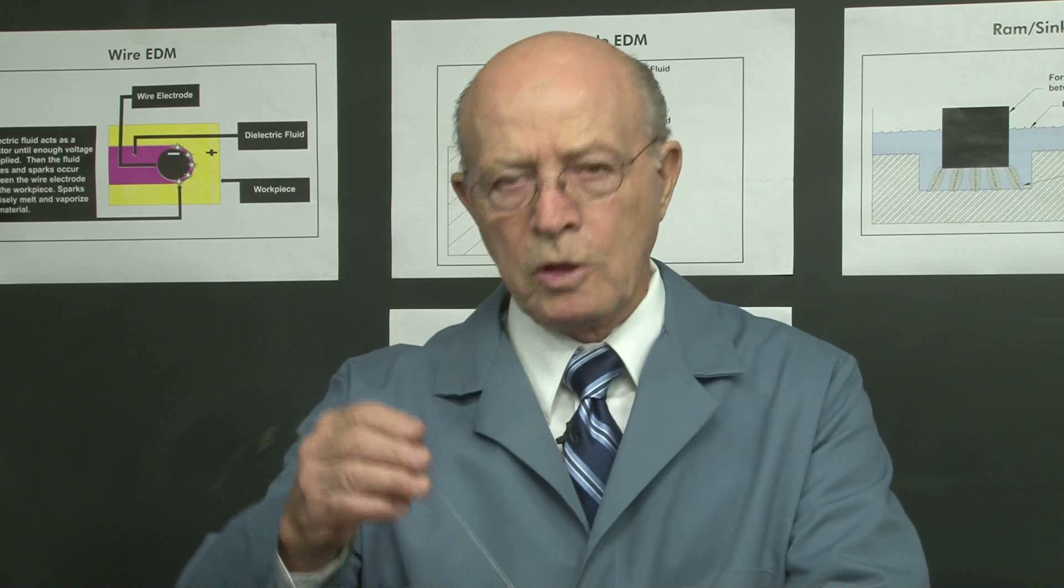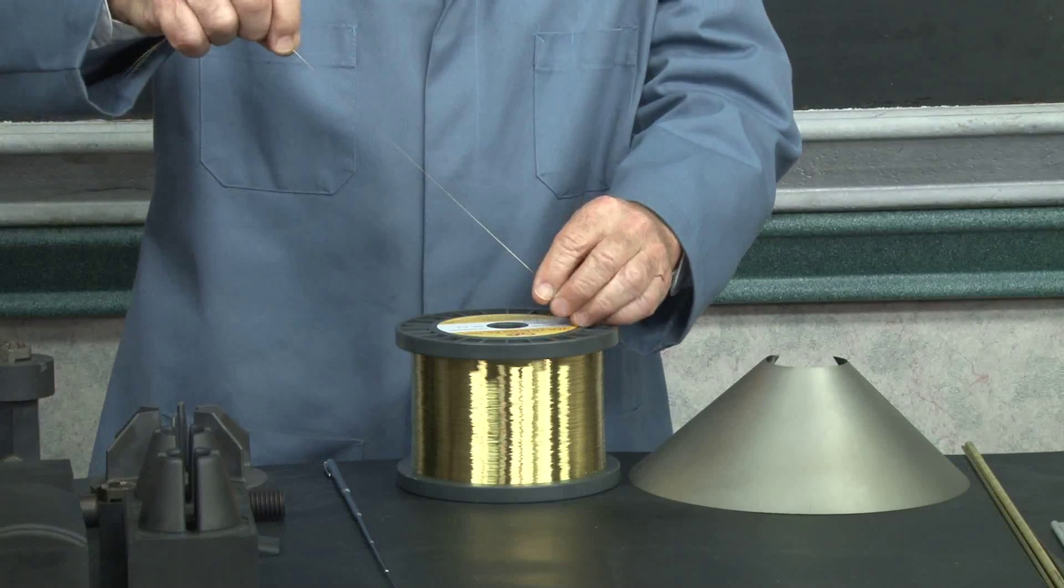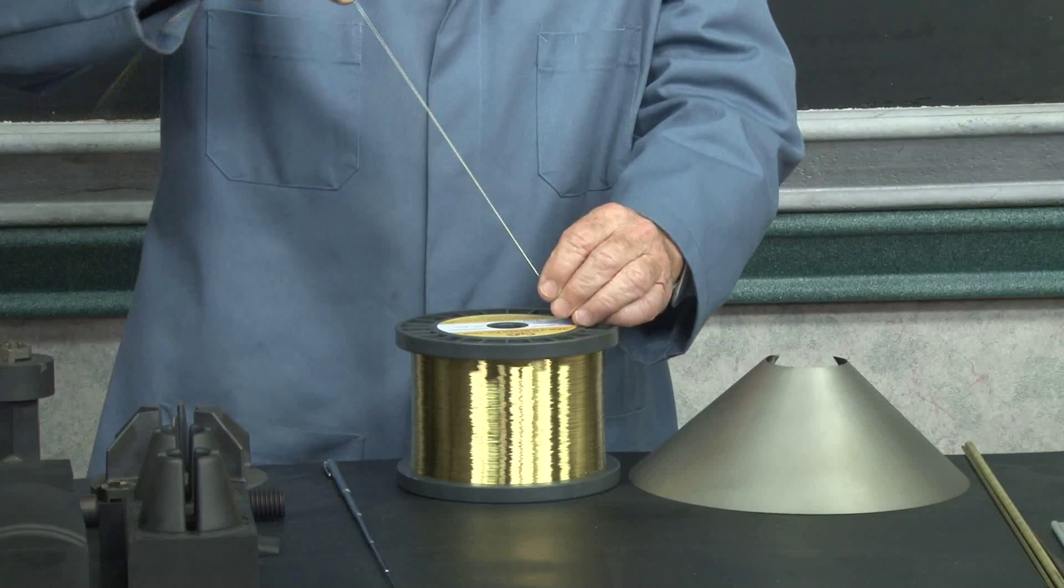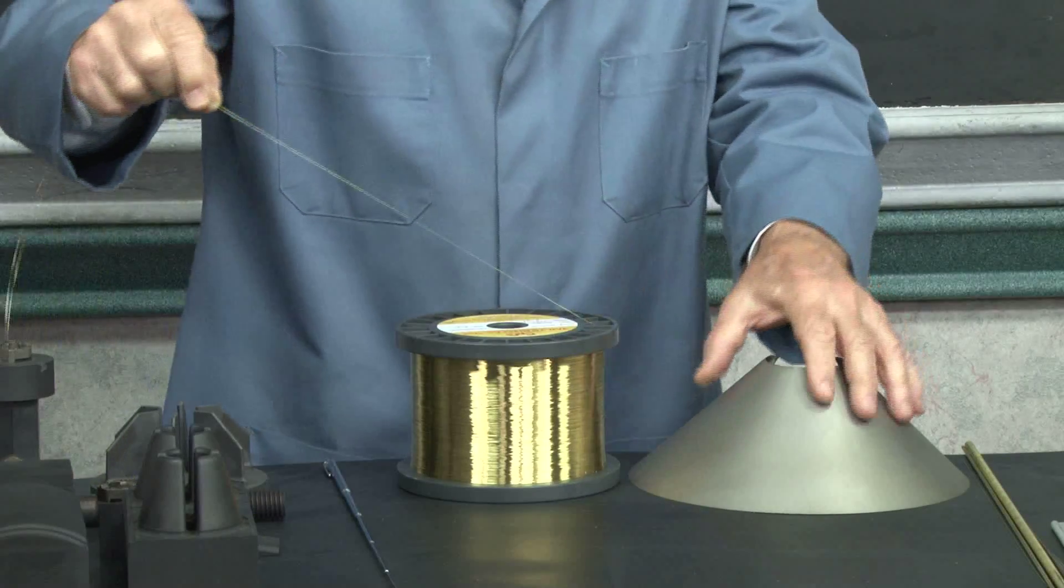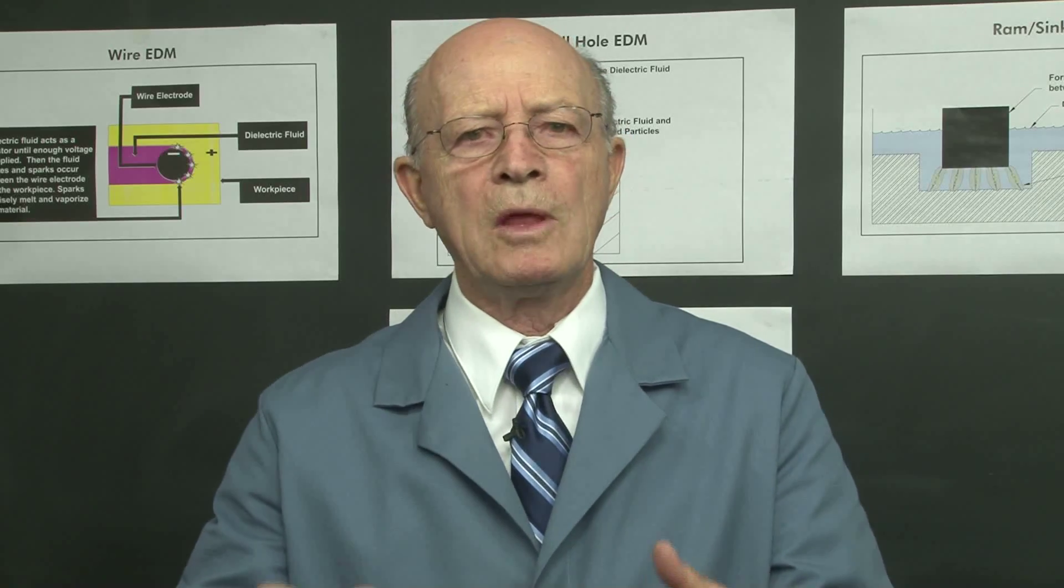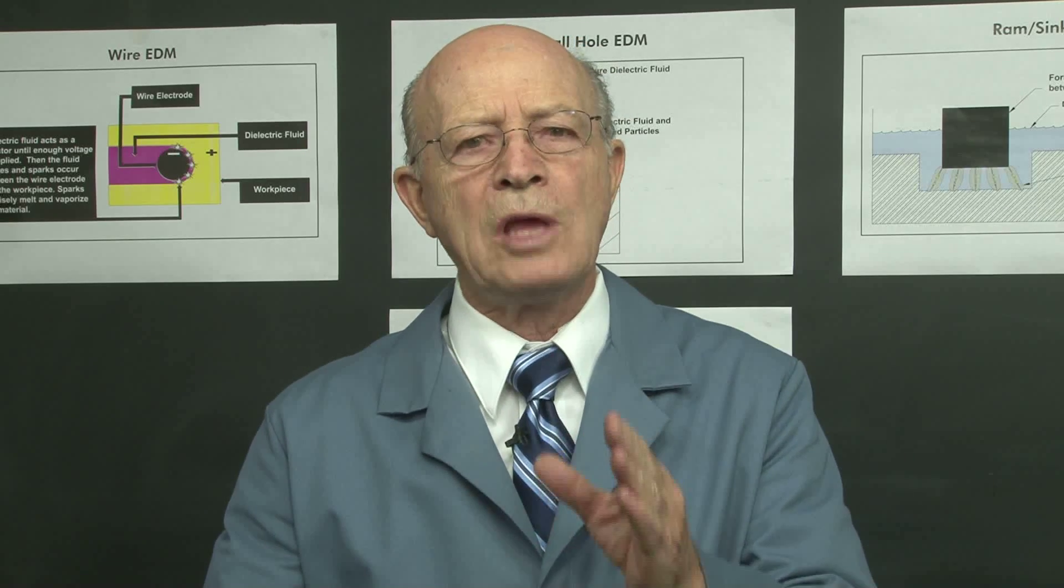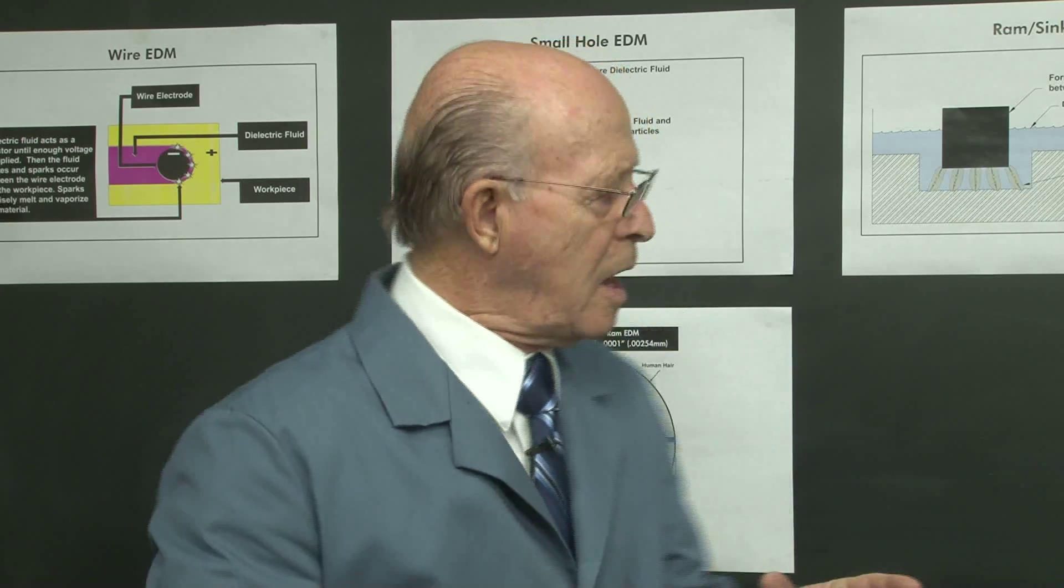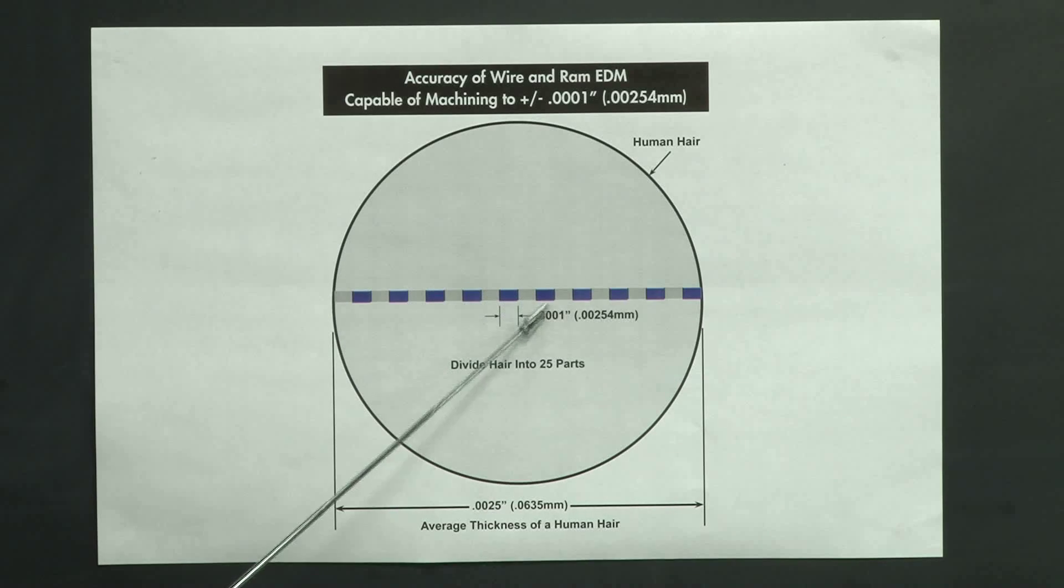I have here now this spool of brass wire. We commonly use 12 thousandths diameter wire, but we can go down to 4 thousandths wire. We can go up to 45 degrees taper. Wire EDM is a precision bandsaw that can cut within accuracies of plus or minus one-tenth of a thousand. And I want you to look at this diagram over here. This is a human hair, and we can cut 1-twenty-fifth of the diameter of a human hair.